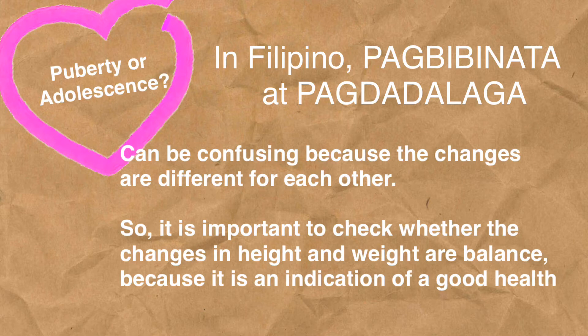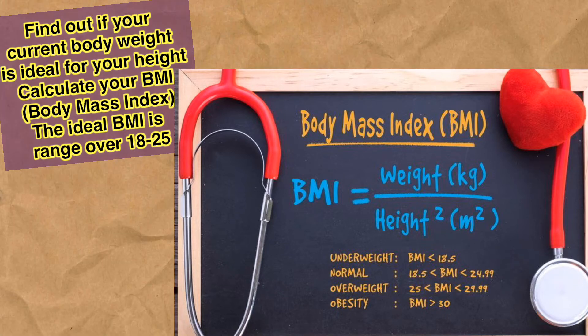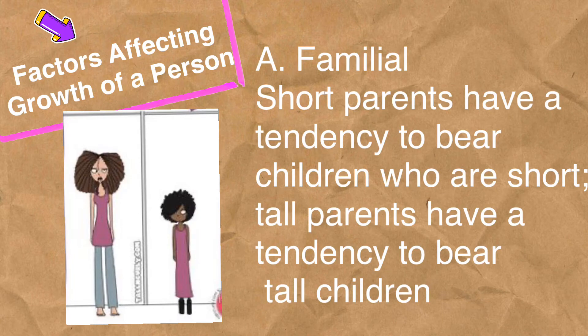It is important to check whether the changes in height and weight are balanced, because it is an indication of good health. Find out if your current body weight is ideal for your height by calculating your BMI or Body Mass Index. The ideal BMI ranges from 18 to 25. Later, you will try to calculate your Body Mass Index.